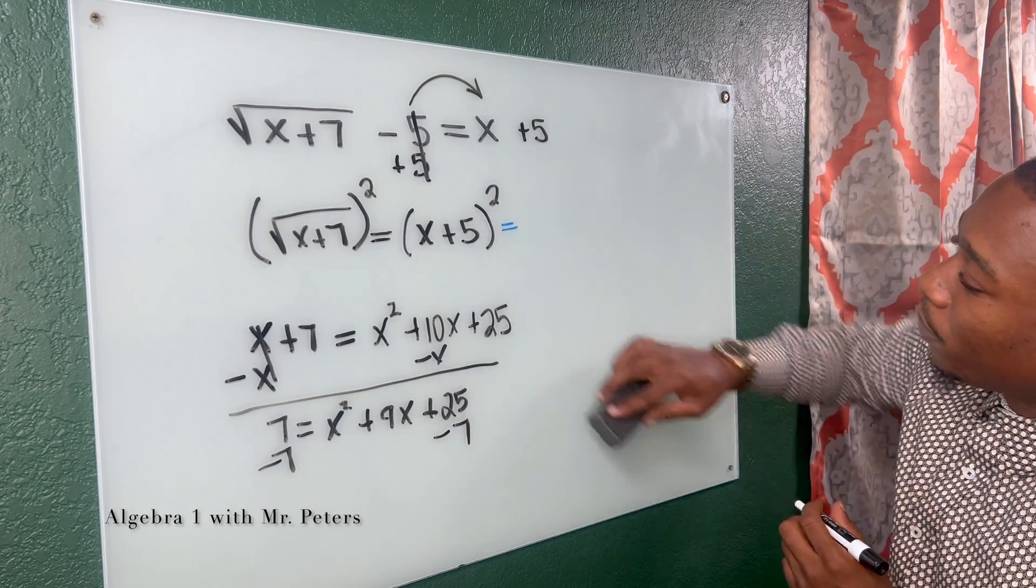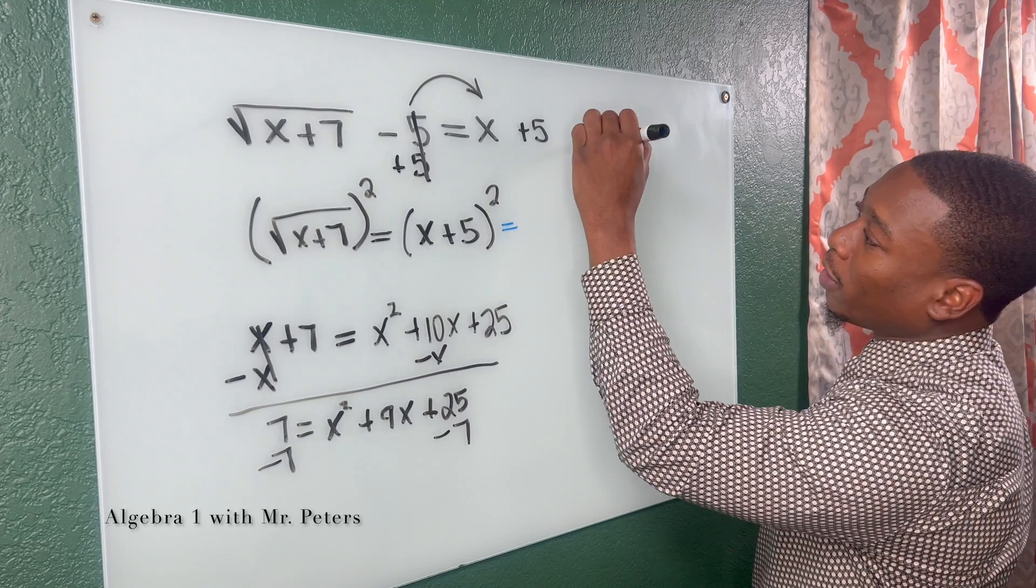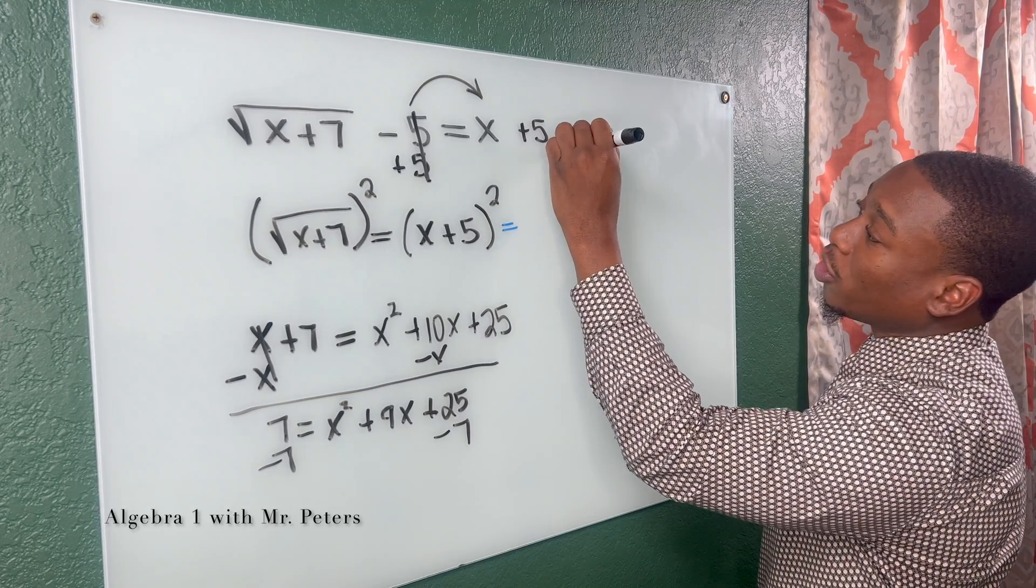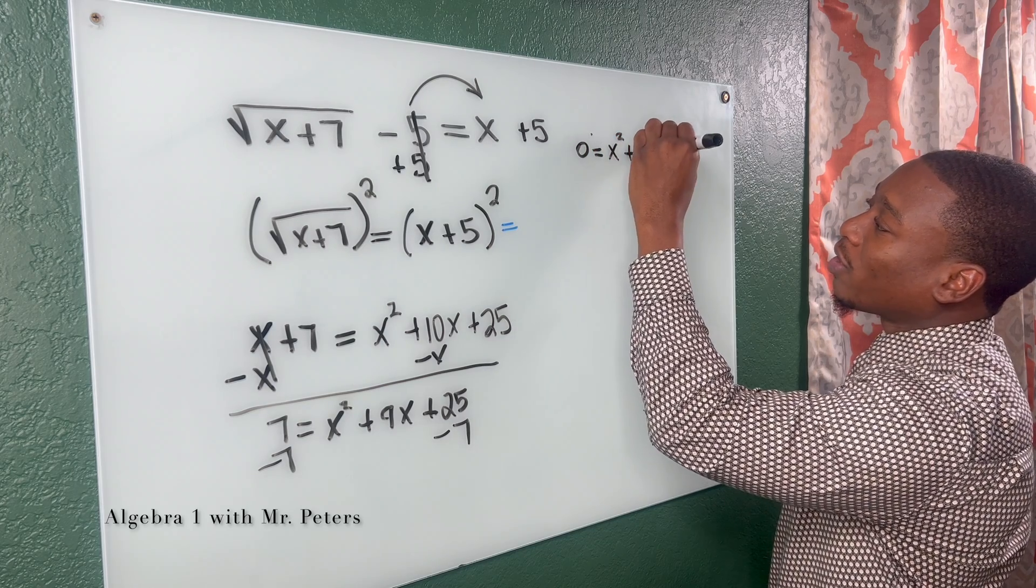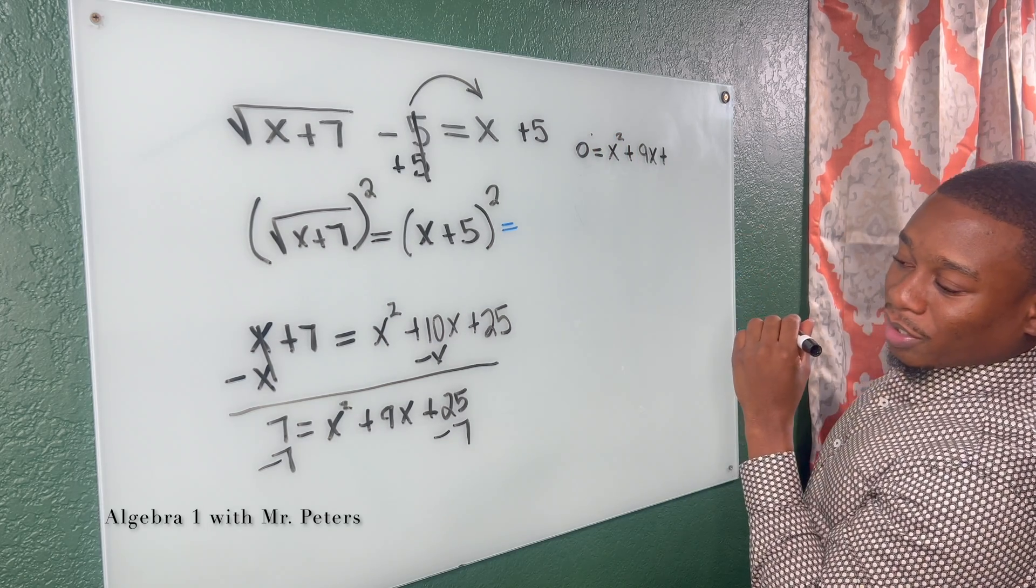Let's get a little bit more space up here. So now what I have is zero is equal to X squared plus nine X plus 18.